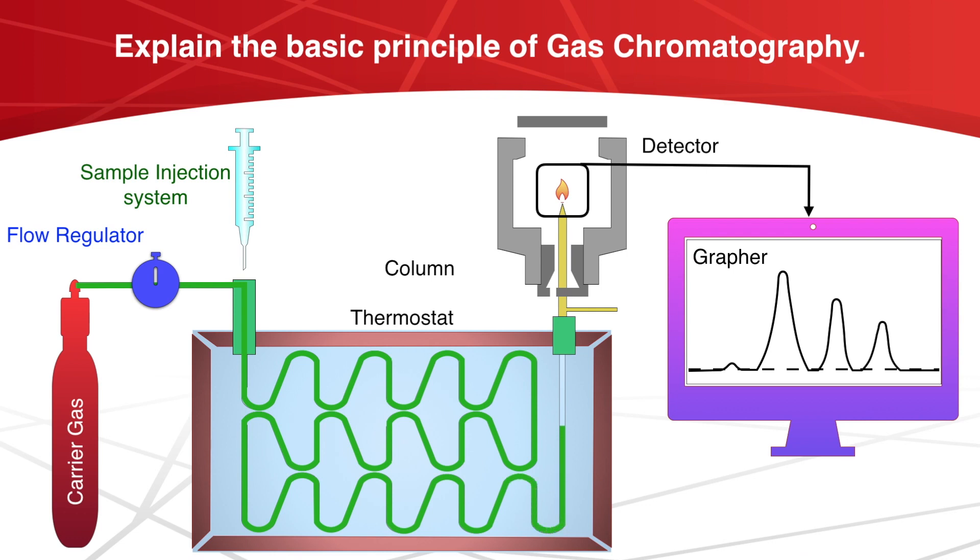That is the tendency of the component to dissolve in the liquid. Component A dissolves to the maximum extent while component C dissolves to the least extent. Component C emerges first along with the carrier gas followed by B and A.